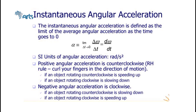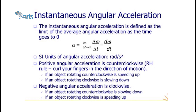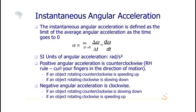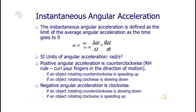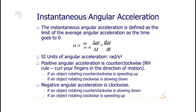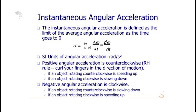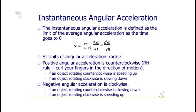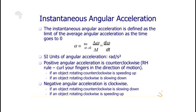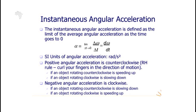Average angular acceleration of an object is defined as the ratio of the change in angular speed to the time it takes for the object to undergo that change. Mathematically, average angular acceleration equals omega final minus omega initial divided by change in t. For instantaneous angular acceleration, we use the limit of change in omega with respect to time, where omega is angular velocity expressed as a function of time. The unit of angular acceleration is radians per second squared.